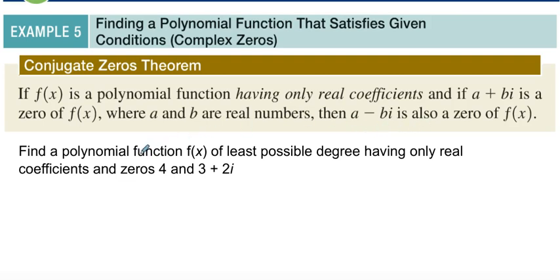So check it out. We want to find a polynomial f(x) of the least possible degree, so we're not trying to make extra degrees in here, just the least possible degree having only real coefficients. And they give us our zeros right here. They give us a zero of 4, and they also tell us that one of the other zeros is 3+2i.